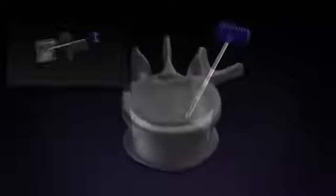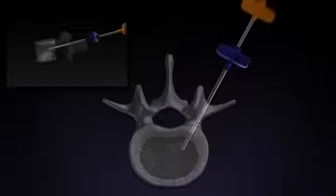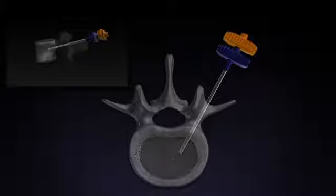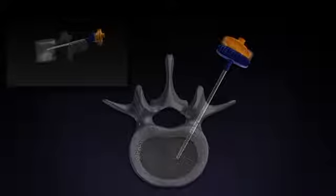The straight line osteotome is then inserted through the introducer into the anterior one-third of the vertebral body to create an initial cavity.